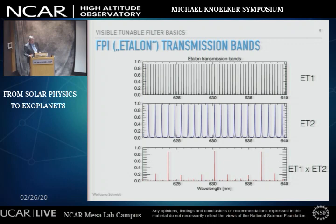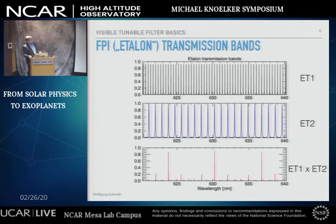Here you see the transmission curves of two Fabry-Perot interferometers. In this project we used to call them etalons, which is by definition wrong — because an etalon is a Fabry-Perot interferometer but a non-tunable one, used as a metrology standard. The word is easy to say and shorter than 'Fabry-Perot interferometer,' so people use 'etalon' knowing that what we really have are tunable Fabry-Perots.